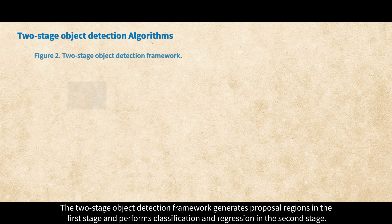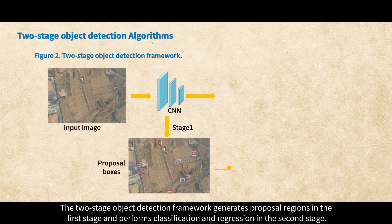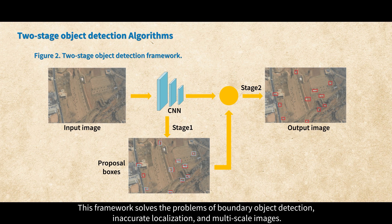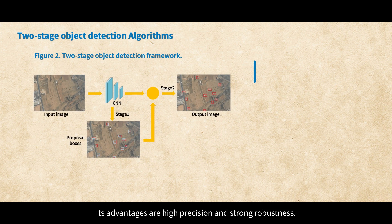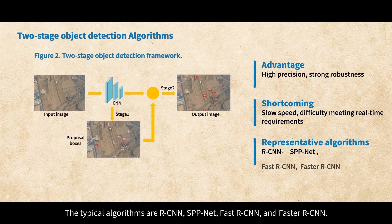The two-stage object detection framework generates proposal regions in the first stage and performs classification and regression in the second stage. This framework solves the problems of boundary object detection, inaccurate localization, and multi-scale images. Its advantages are high precision and strong robustness. The disadvantage is that the speed is slow and it is difficult to meet real-time requirements.